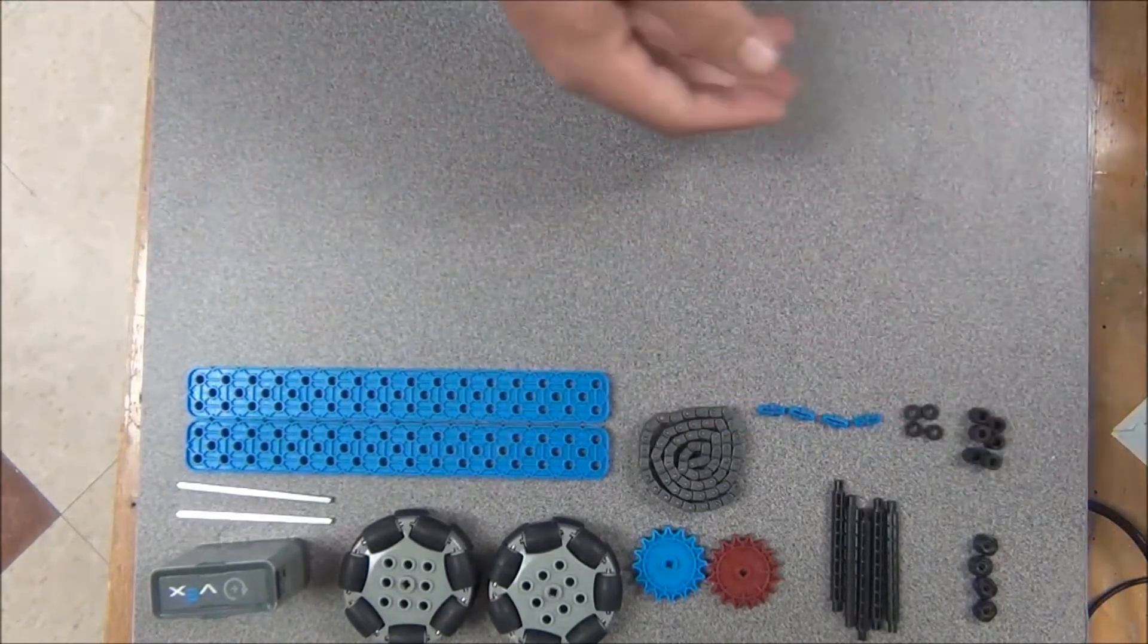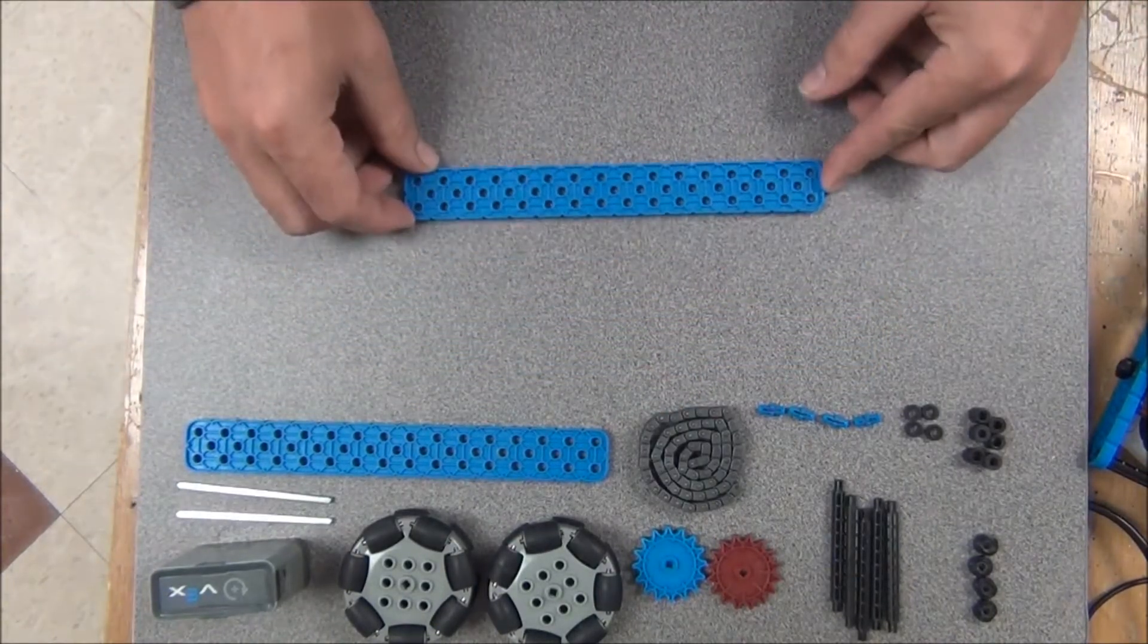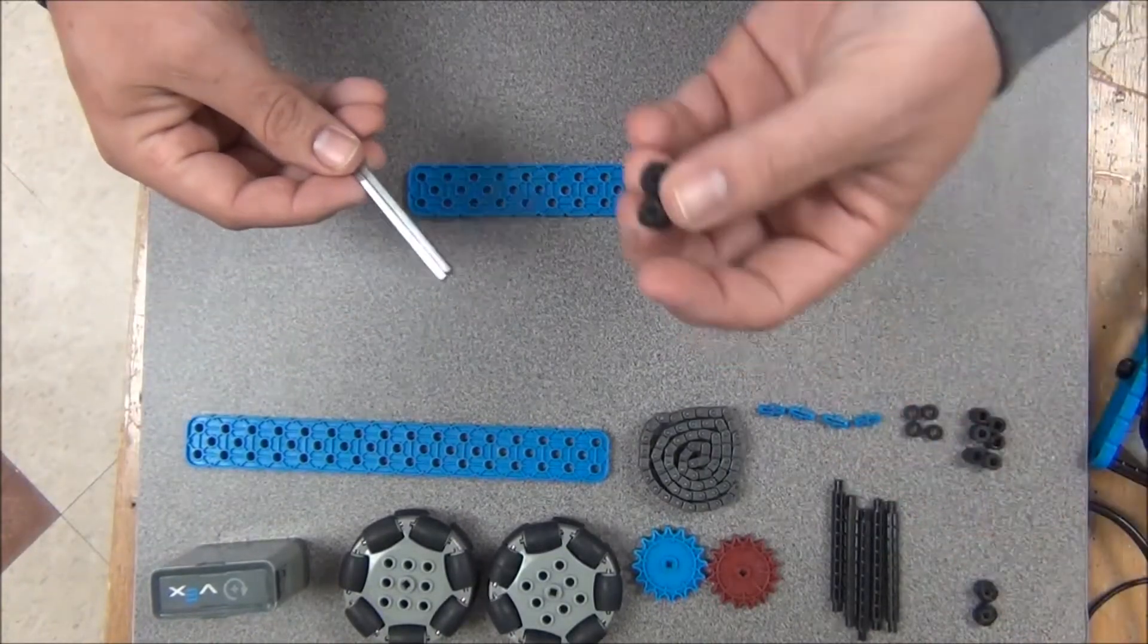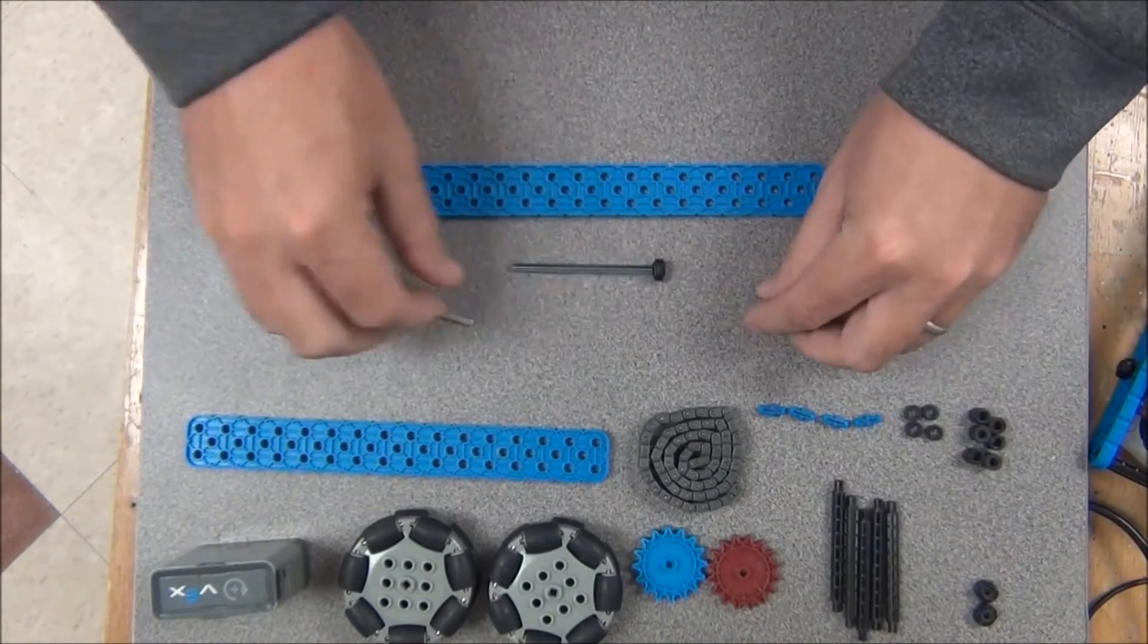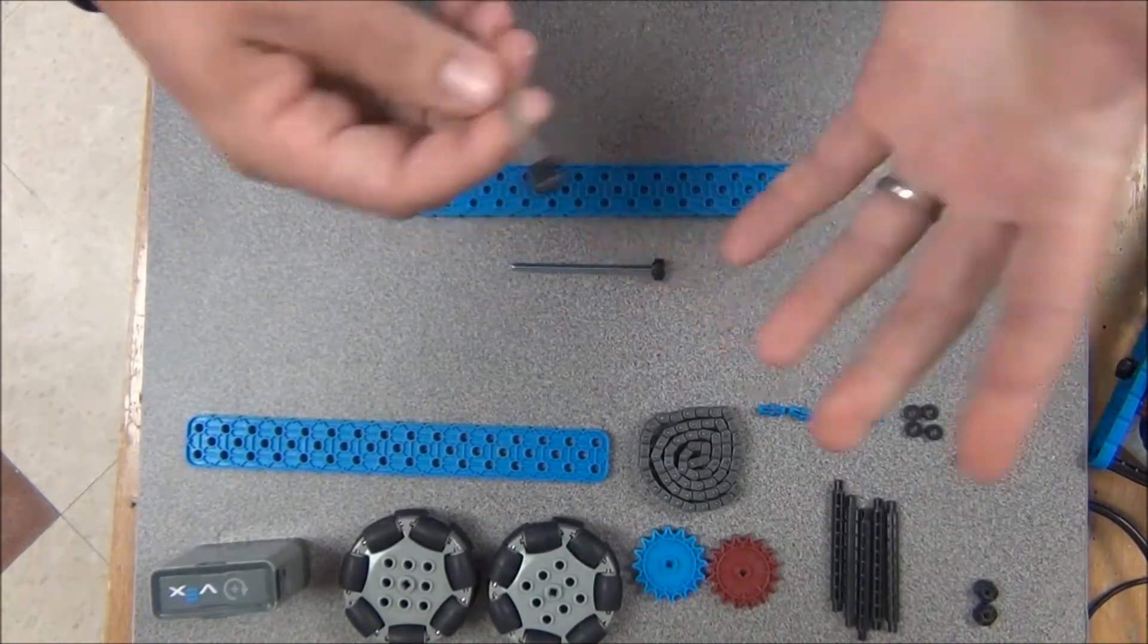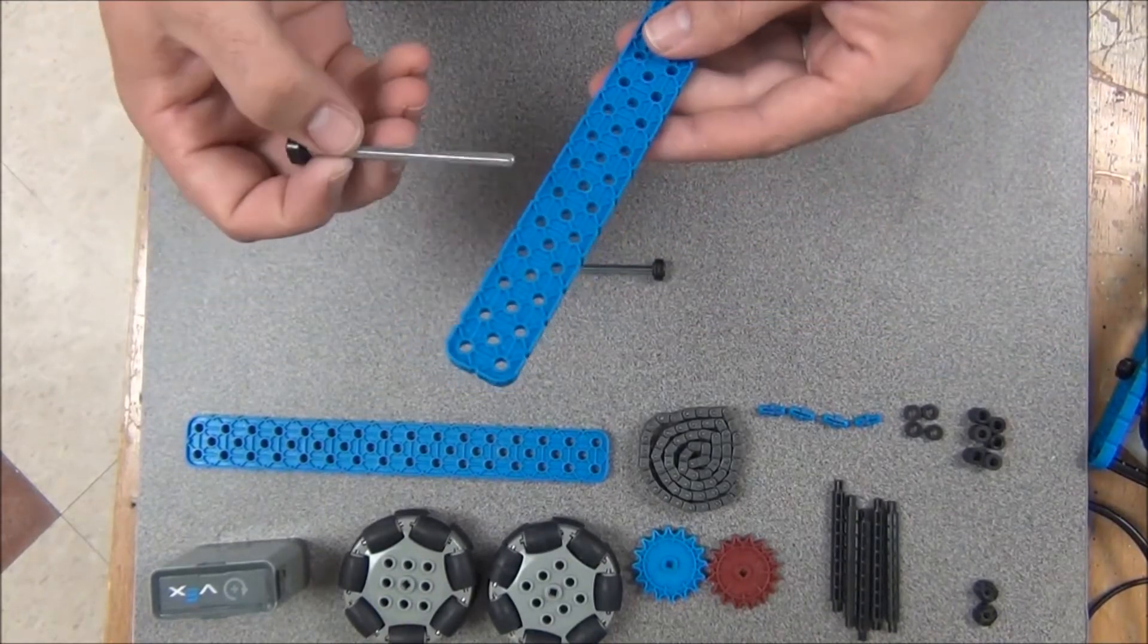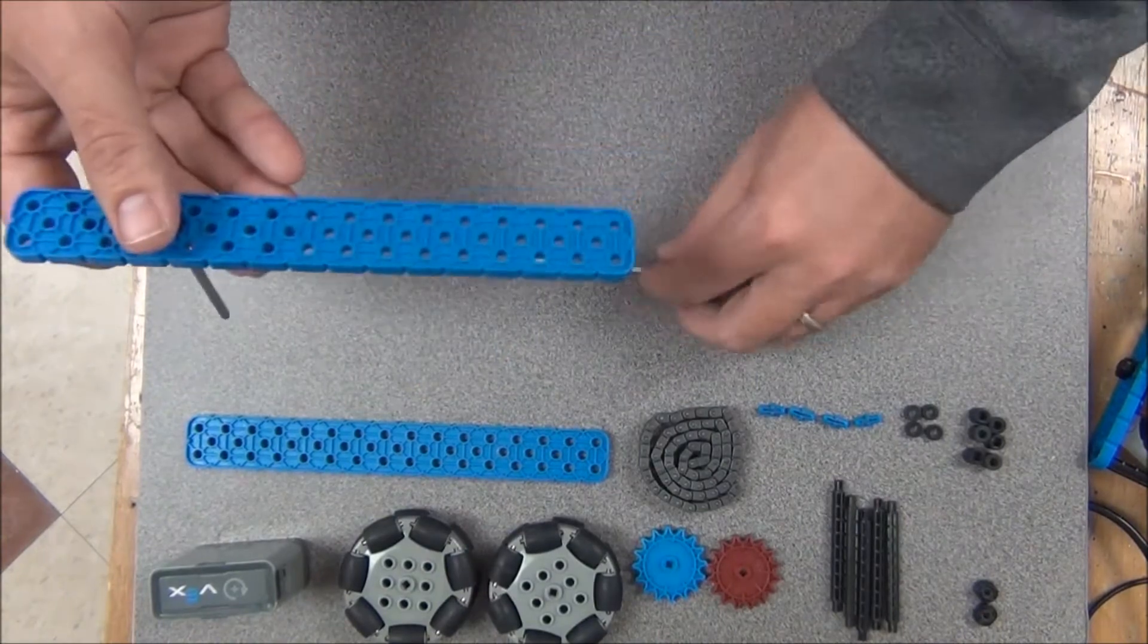First off I'm going to take one of my 2x16 beams and have those ready, and then I'm going to grab both of my axles and two of my shaft collars and I'm going to start simply by putting the shaft collars onto the end of my axles. Next I'm going to insert them into here and for this particular build I'm going to go in four of the center holes from each end.